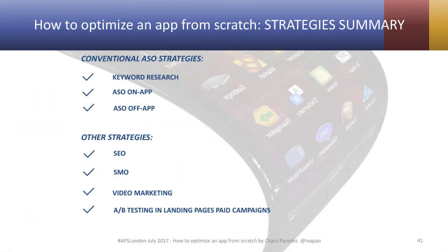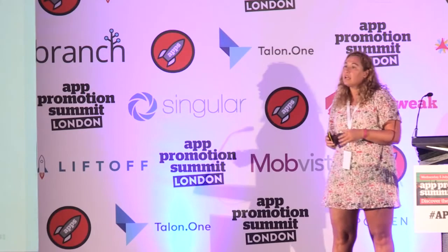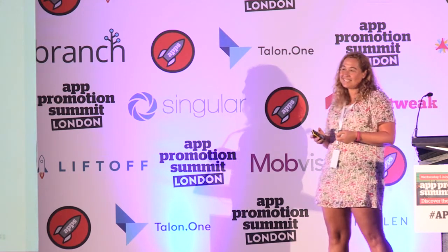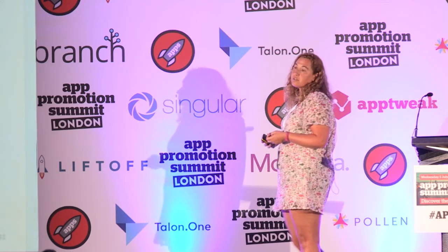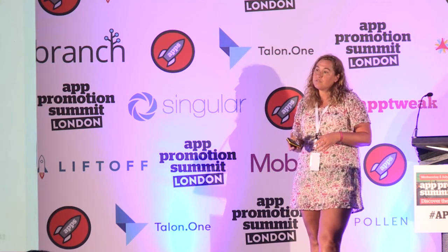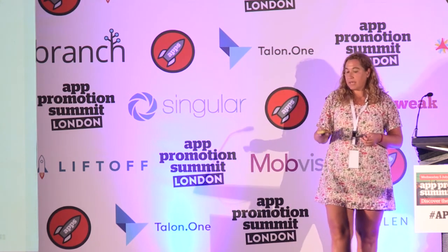Remember that you need to use your conventional ASO strategies — keyword research, ASO on-app, ASO off-app — but you can also think outside the box: do your SCO to drive conversions and organic installs, use your web as a way of acquiring users who become hopefully recurrent users and subscribers. You can also do social media optimization, video marketing, as well as any type of A/B testing, and focus on paid landing page campaigns.